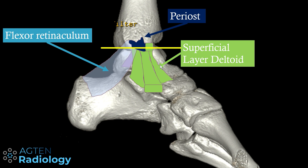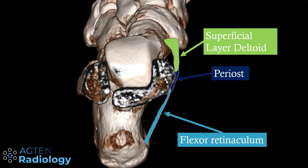Now if we do a cross-section at this level it looks like this. We have the medial malleolus, this one is the talus, and the medial malleolus is covered by periost. Here in the front we have fibers of the superficial deltoid ligament — in this case the tibionavicular ligament — blending in with the periost at the side of the attachment, and on the back there is an extension where the flexor retinaculum is inserting.